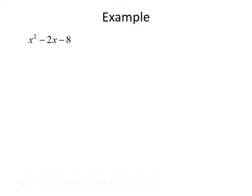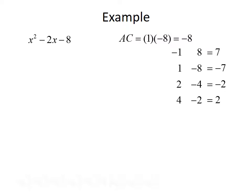Let's do an example. We want to factor x squared minus 2x minus 8, where capital A is 1, capital B is negative 2, and capital C is negative 8. We start by multiplying A times C: 1 times negative 8 gives us negative 8. Listing factors of negative 8: negative 1 times 8, 1 times negative 8, 2 times negative 4, and 4 times negative 2.